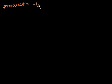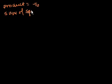So the first problem is: find two numbers whose product is negative 16 — so the product is equal to minus 16 — and the sum of whose squares is a minimum.